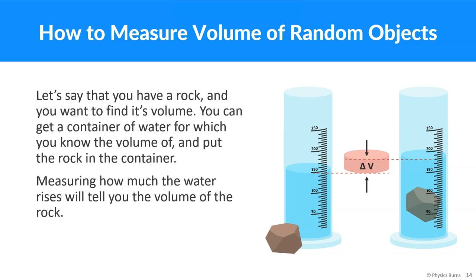This is something important to know when measuring. Let's say you have a rock and you want to find its volume. You can get a container of water for which you know the volume, and put the rock in the container. Measuring how much the water rises will tell you the volume of the rock. So if the water starts at 150 units of volume and we put the rock in, however much it goes up by will tell us the volume of the rock. This is especially helpful for irregular shapes like a rock.